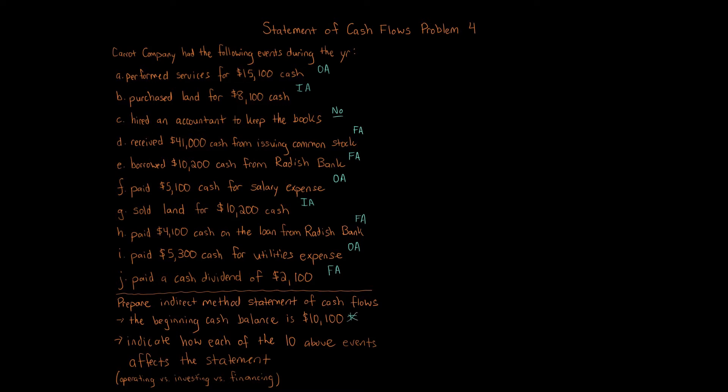We're going to need the beginning cash balance of $10,100 when we actually present the information on the statement of cash flows. Now we get to put together the pieces and build the statement. The indirect method shows operating activities net cash flow first, then net cash flow from investing activities, and then net cash flow from financing activities in that order. Then we take the beginning balance, and that should equal our ending cash balance. Let's start with cash flow from operating activities.